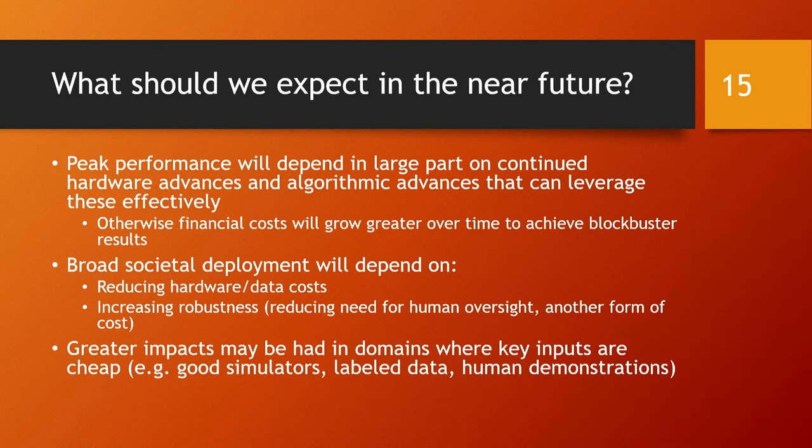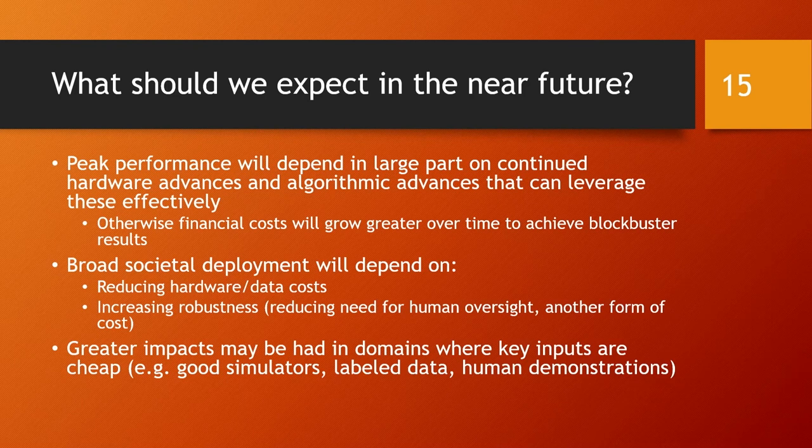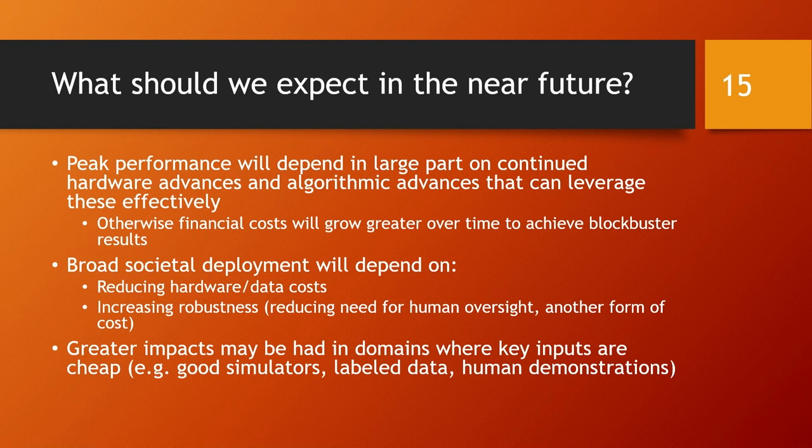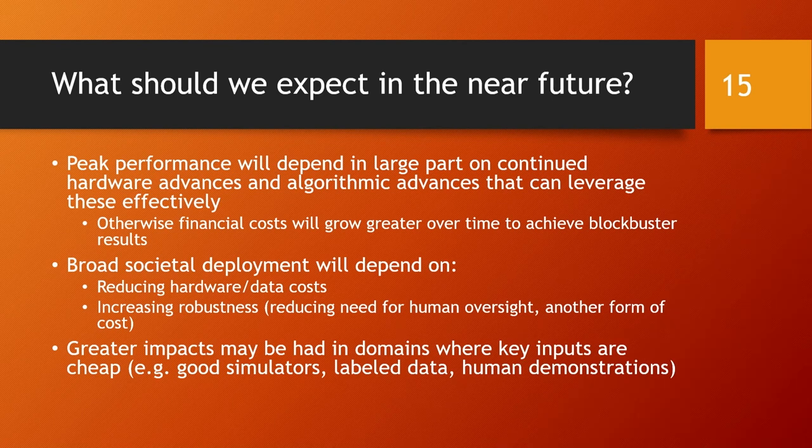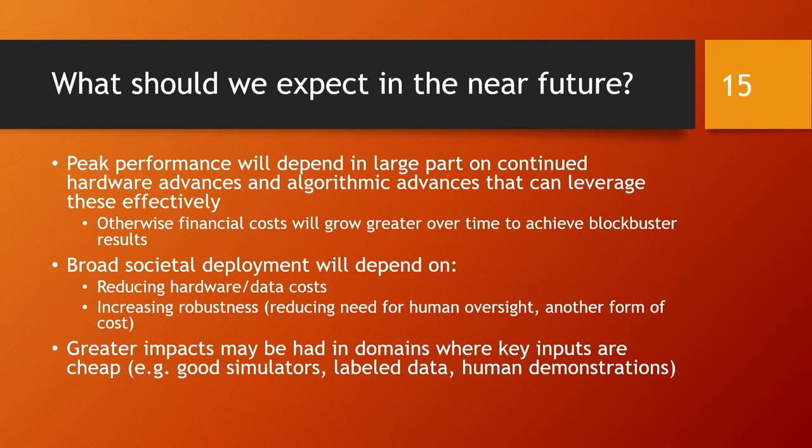Broad societal deployment will depend on reducing these costs. Both the hardware and the data costs, not just making the hardware itself cheaper, but using less of it, as well as increasing robustness. You can think of lack of robustness as a cost because it might require a human to intervene, or it might require more human-machine symbiosis, which can be the right decision in some cases. But if you want full automation, then you can think of this as a cost that also needs to be reduced.